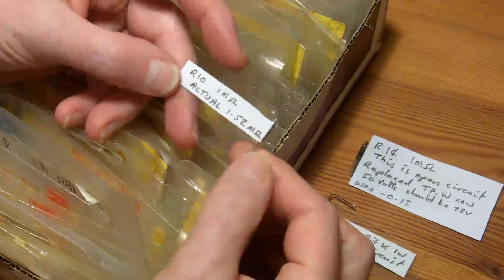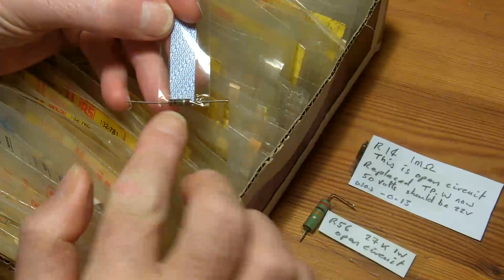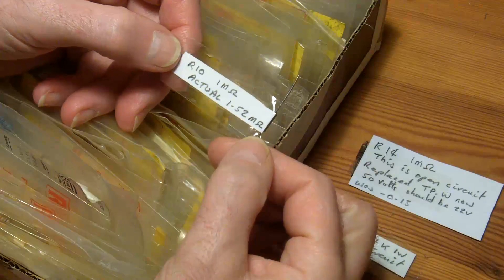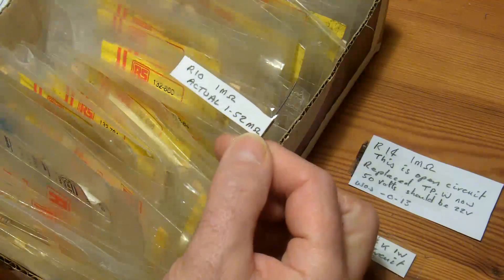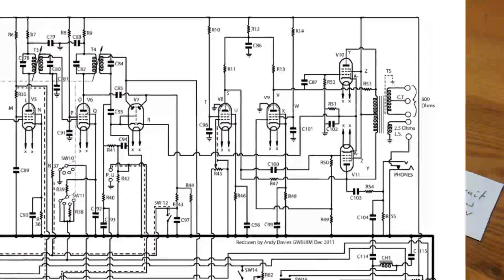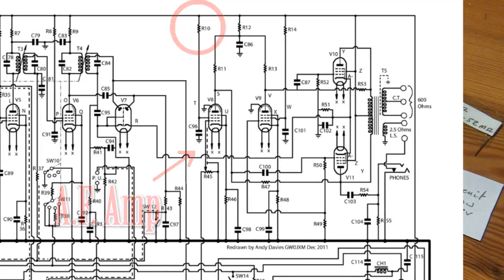This is the story so far. This is resistor R10, a 1 meg resistor, the screen grid resistor that should be 1 meg but is actually 1.52 meg, so I've replaced that.